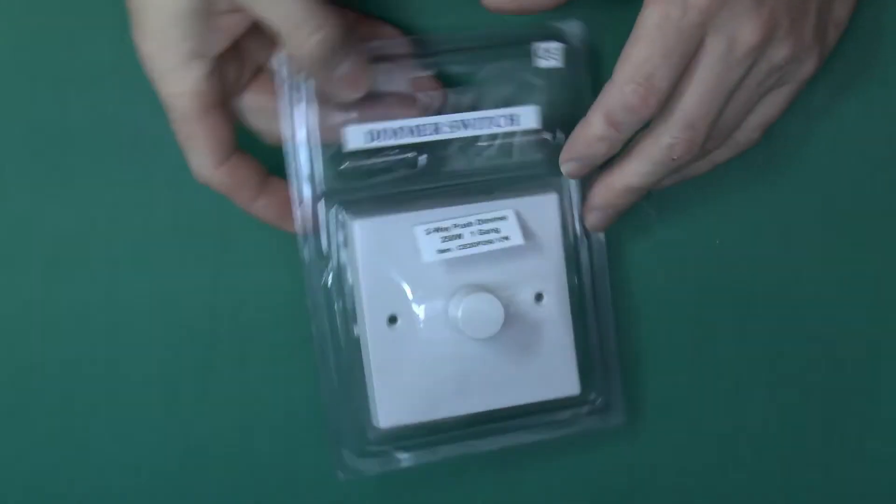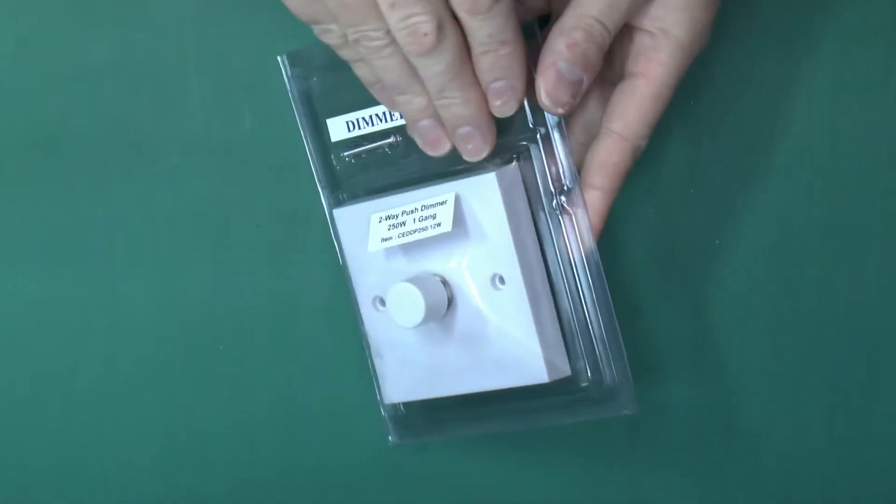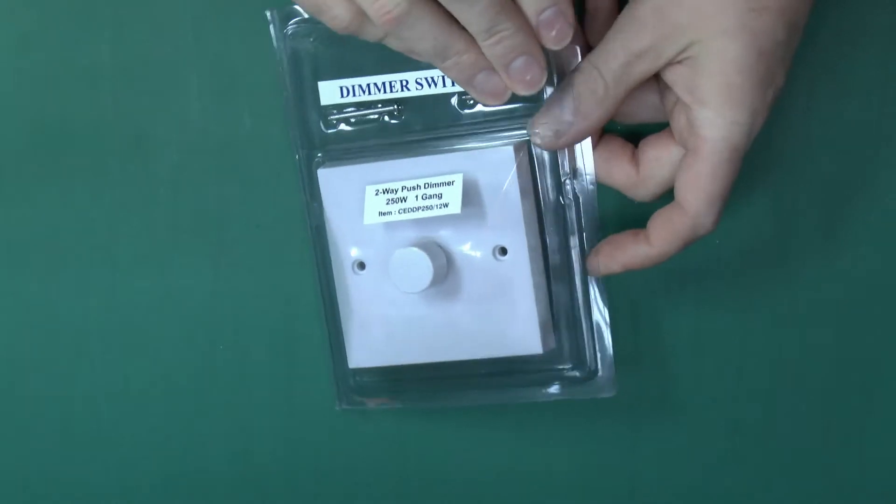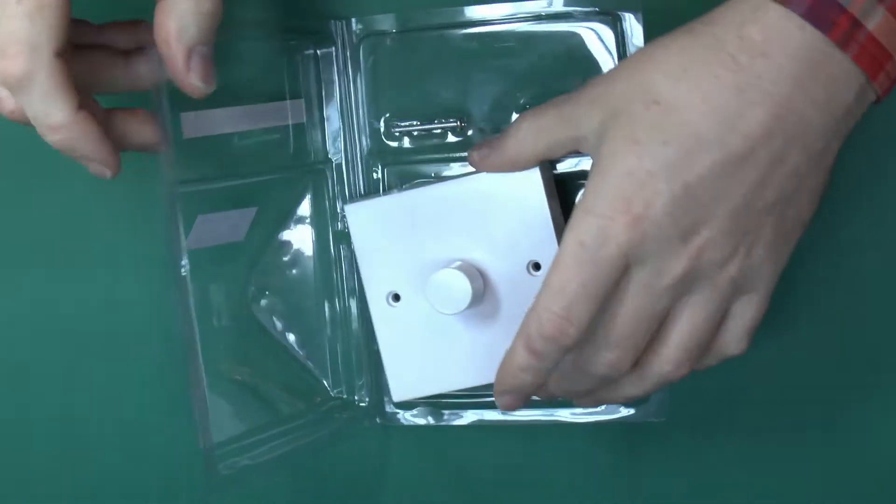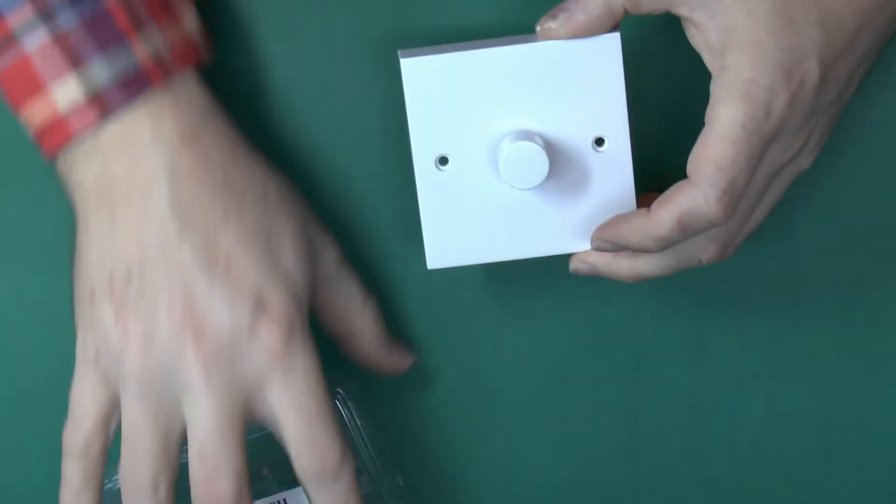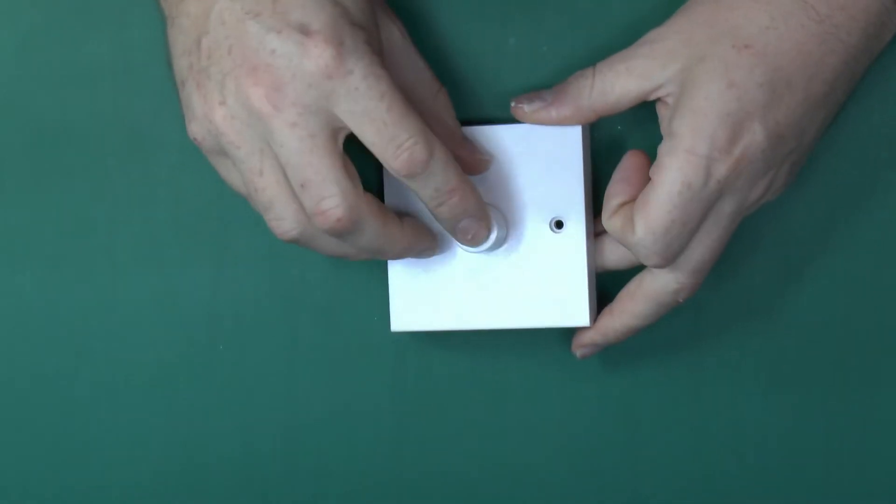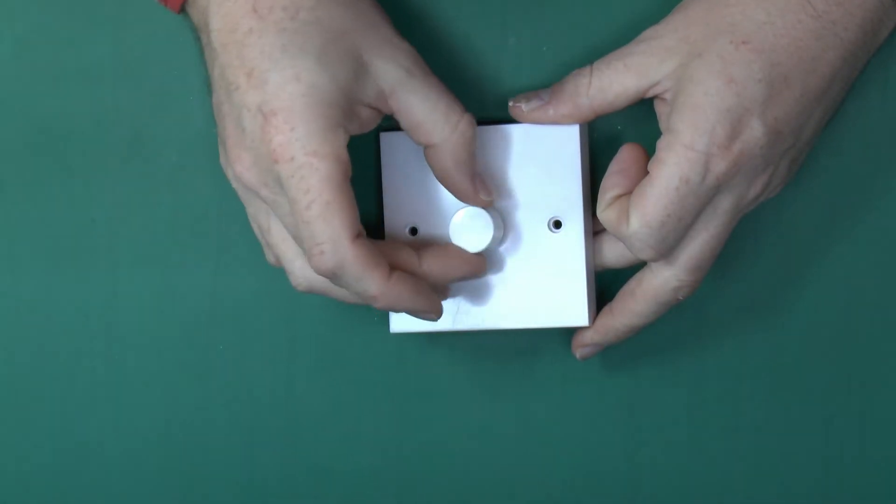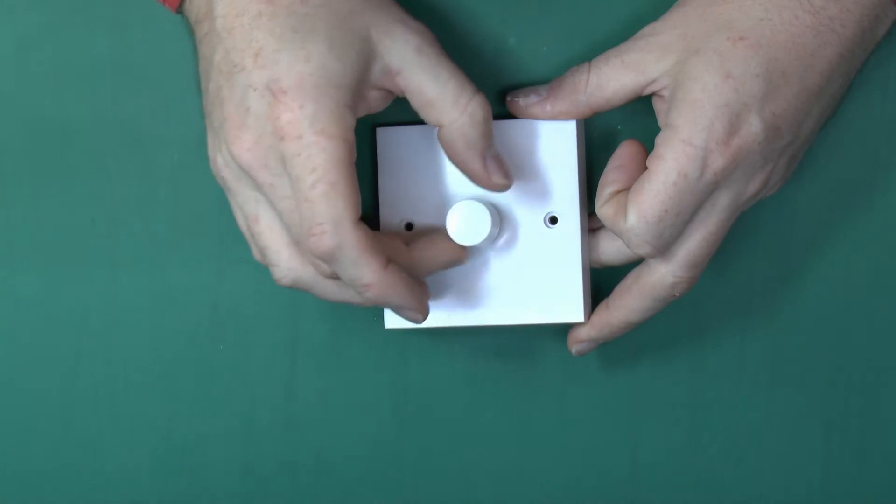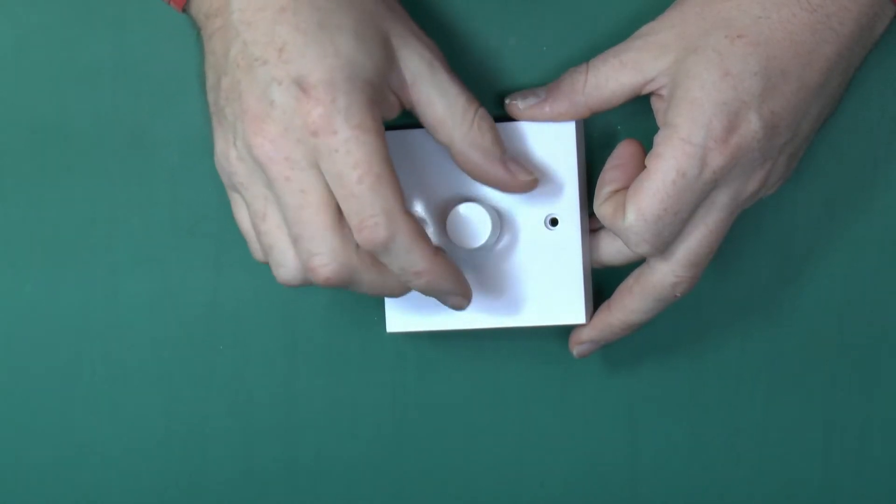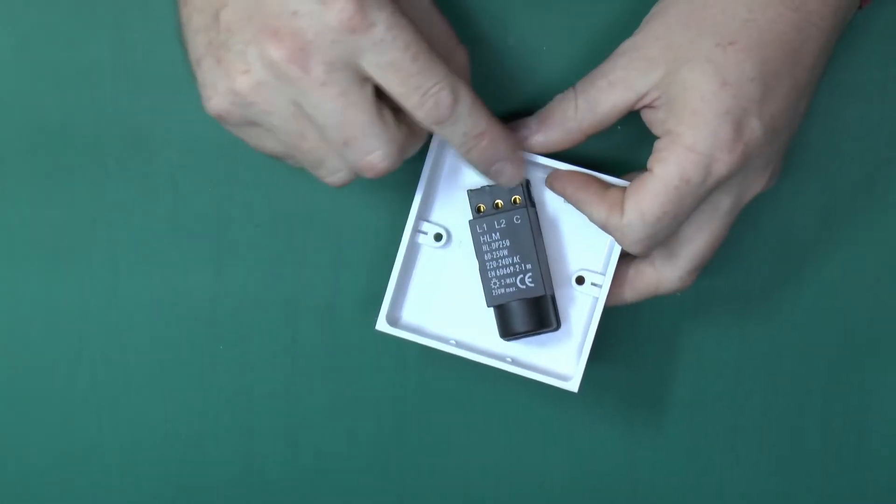Right, here is the switch. Nothing unusual about this, it's just a standard white dimmer switch you can buy pretty much anywhere. It's one of these that actually presses on and off for the switching function and then you can just turn it for the various brightness levels.